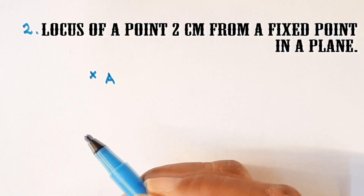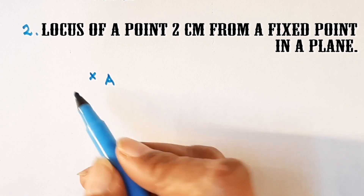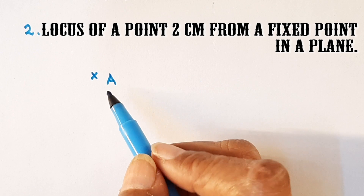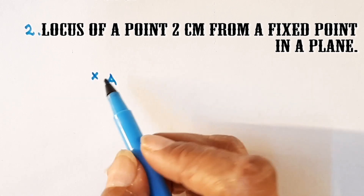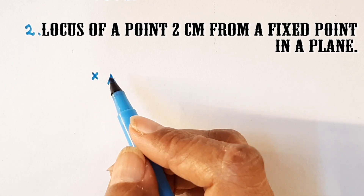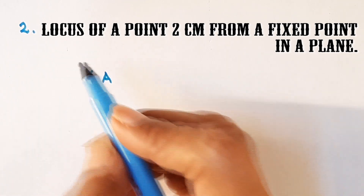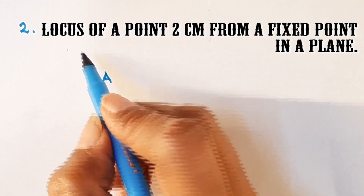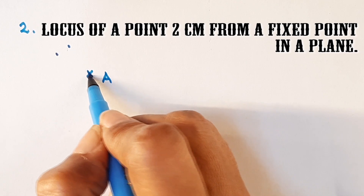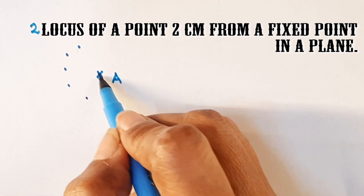To understand the locus of a point which is 2 cm from a fixed point in a plane. We have taken this as the plane of the paper and we will gently plot the points 2 cm from it. Let us say this is 2 cm, so we will take 2 cm from this fixed point.